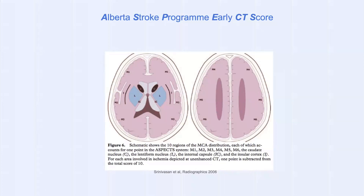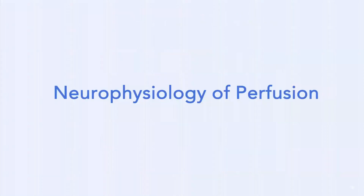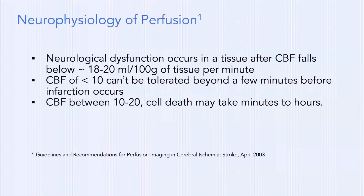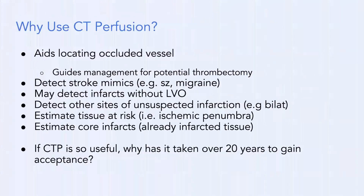Let's talk about the neurophysiology of perfusion. Neurologic dysfunction occurs in tissue after cerebral blood flow falls below approximately 18–20 cc's per 100 grams of tissue per minute. Below 10, it can't be tolerated beyond a few minutes before infarction occurs. CBF between 10 and 20 — cell death may take minutes or hours, and this is where we can intervene.